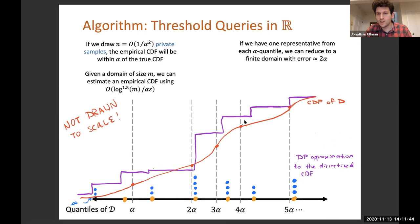Since all of these steps gave me some approximation up to some error about alpha, the purple CDF and the red CDF will be within 3 or 4, 5 alpha. I wasn't quite keeping track. Of course, this isn't drawn to scale. The purple and red CDFs don't look too close, but that's just because there's limitations to how well I can draw this.